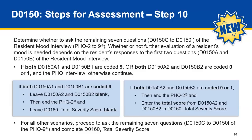The guidance clarifies what to do when both D0150A1 and D0150B1 are coded as a 9: leave D0150A2 and D0150B2 blank, then end the PHQ 2, and leave D0160 total severity score blank. The guidance also identifies what to do if both D0150A2 and D0150B2 are coded as a 0 or a 1: end the PHQ 2, and enter the total score from D0150A2 and D0150B2 in D0160 total severity score.